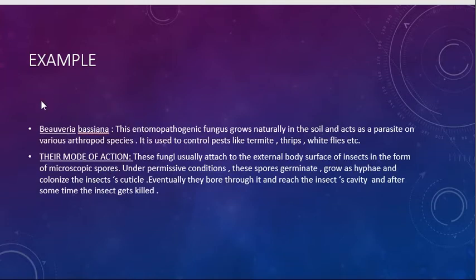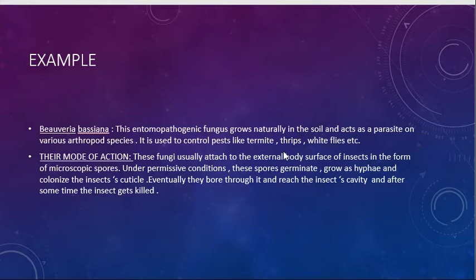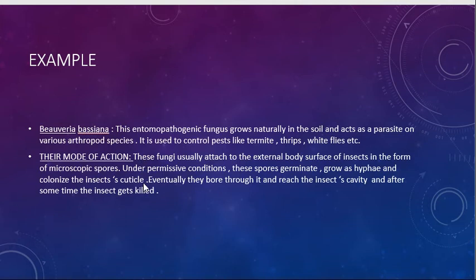A very good example of this is these entomopathogenic fungi, which naturally grow in the soil and act as parasites on various arthropod species. They are used to control pests like termites, thrips, whiteflies, etc. Their mode of action: these fungi usually attach to the external body surface of insects in the form of microscopic spores. Under permissive conditions, these spores germinate, grow as hyphae, and colonize the insect's cuticle. Eventually they bore through it and reach the insect's body cavity, and after some time the insect dies.